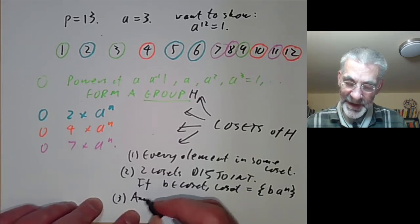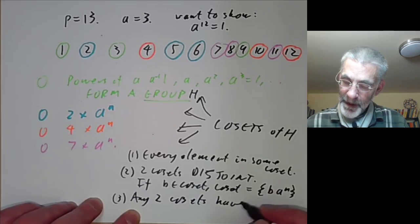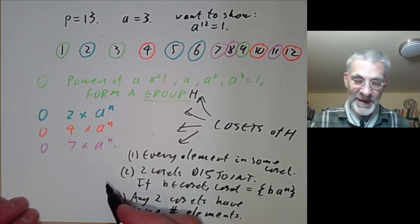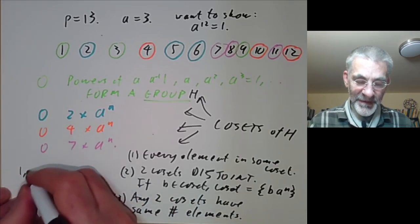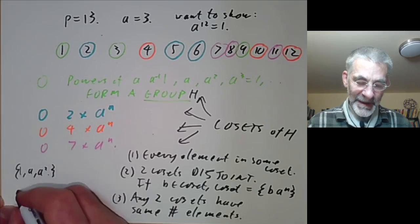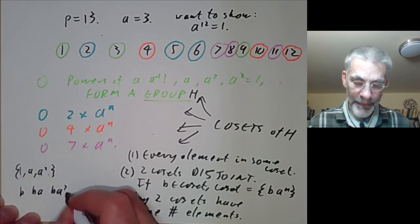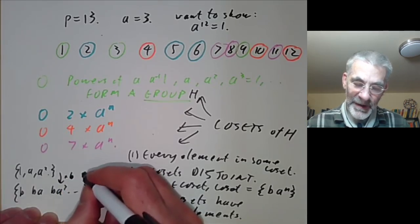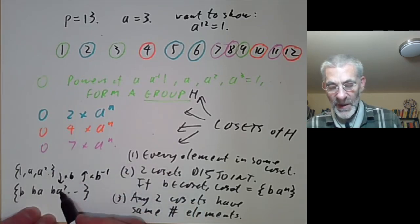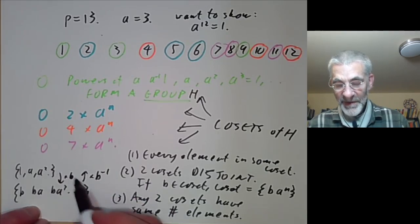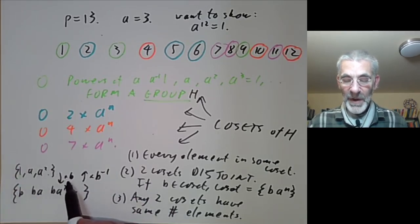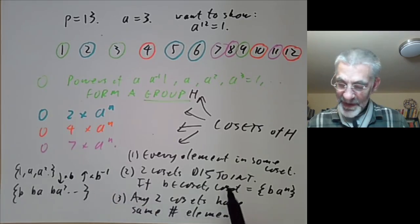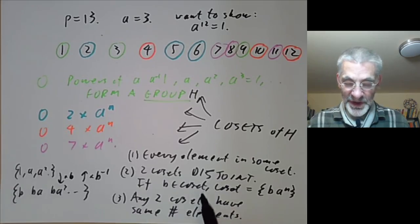The third key point is that any two cosets have the same number of elements. You can see this easily: if one coset is the powers of a and another is b times the powers of a, we define a map between them by multiplication by b, with inverse given by multiplication by b⁻¹. This gives a bijection between them. Note this uses the existence of inverses in the group.